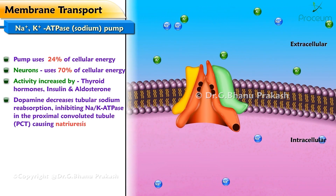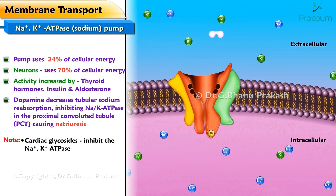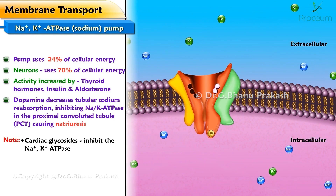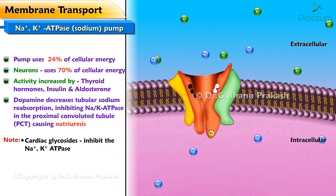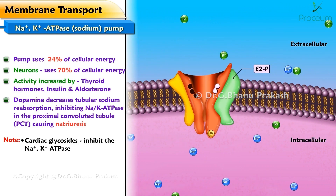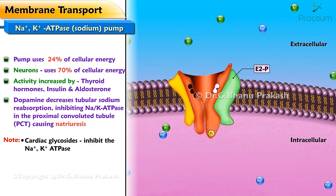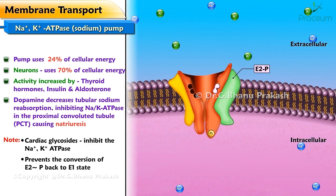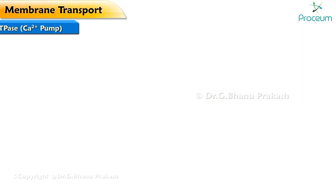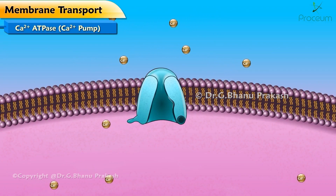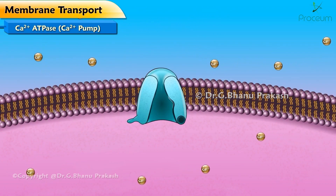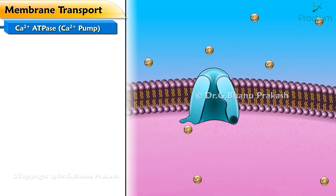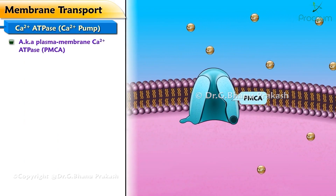Dopamine decreases tubular sodium reabsorption by inhibiting the Na+/K+ ATPase in the proximal convoluted tubule (PCT), causing natriuresis. Cardiac glycosides inhibit the Na+/K+ ATPase by binding to the E2P form near the K+ binding site on the extracellular side, thereby preventing the conversion of E2P back to the E1 state.